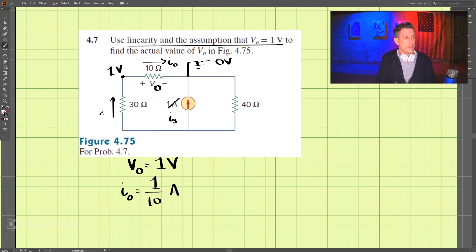And so I0 is also here. So if we take I0 times this, 1 tenth times 30, that's 3 volts. So that makes this point 4 volts.